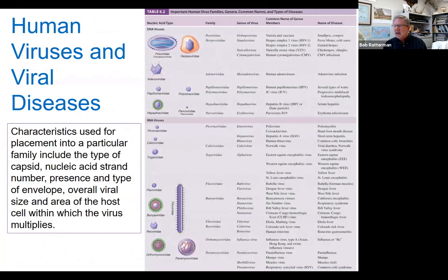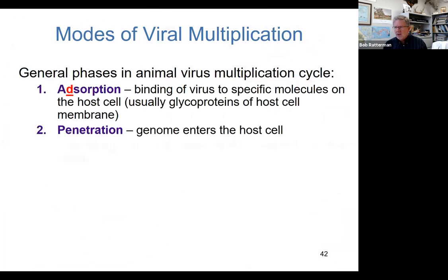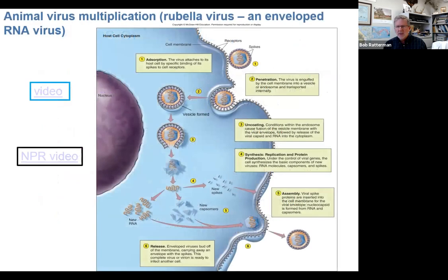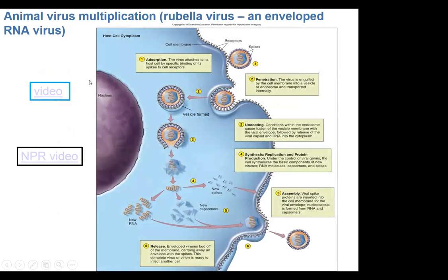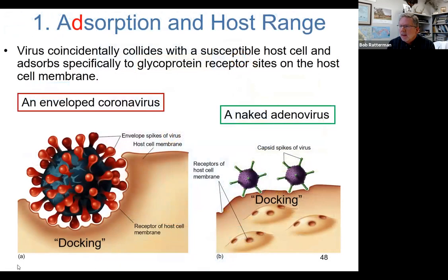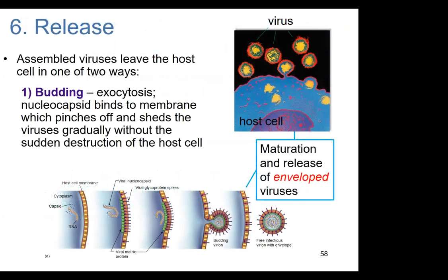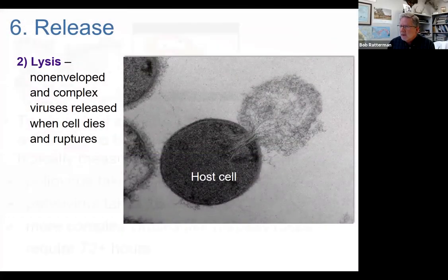We get into a little bit of the taxonomy. Then we get into viral multiplication cycles. I'm not going to go through all of these — are there questions on the steps? Are we good with this? Anybody have specific questions related to animal virus replication? How it occurs? This is something you're going to want to know. There are some videos you should have watched.